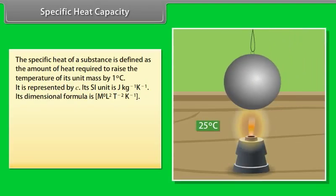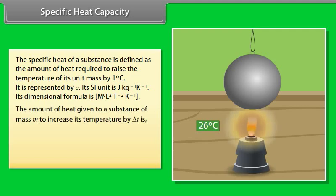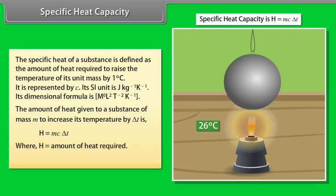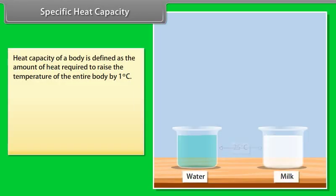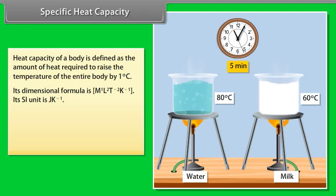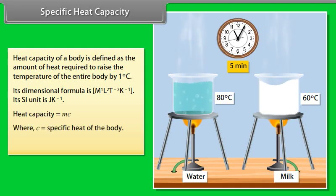The specific heat of a substance is defined as the amount of heat required to raise the temperature of its unit mass by 1 degree Celsius. It is represented by C, with SI unit Joule per kilogram per Kelvin. The amount of heat given to a substance of mass M to increase its temperature by delta T is H equals MC delta T. Heat capacity of a body is defined as the amount of heat required to raise the temperature of the entire body by 1 degree Celsius. Its SI unit is Joule per Kelvin, and heat capacity equals MC.